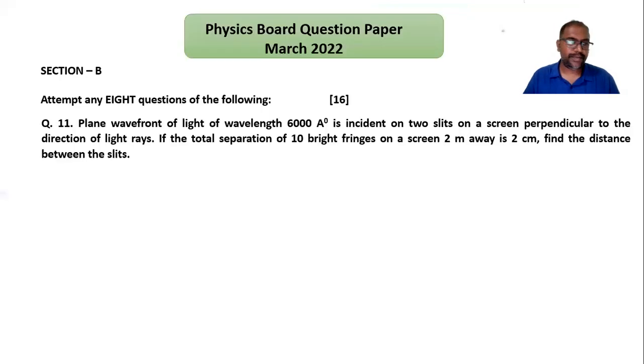Let's see the solution. Here, this is the wavelength lambda. It's incident on a screen perpendicular to the direction of light rays. Total separation for 10 fringes is two centimeters, means 10 times the bandwidth is two centimeters, and here two meters is the distance of the screen, which is capital D.